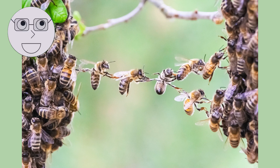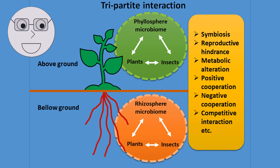Ants, bees, and wasps are social insects that live in colonies. These insects have a division of labour, with different individuals performing different tasks. A colony of ants working together to gather food, a bee collecting nectar from a flower.